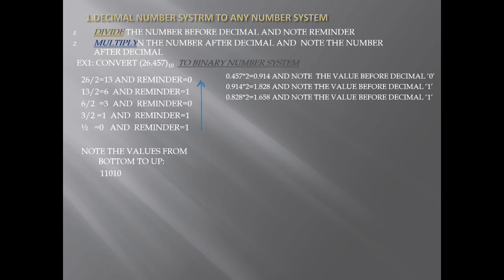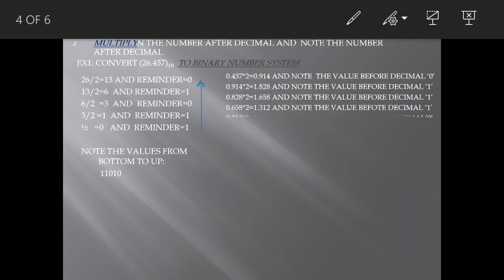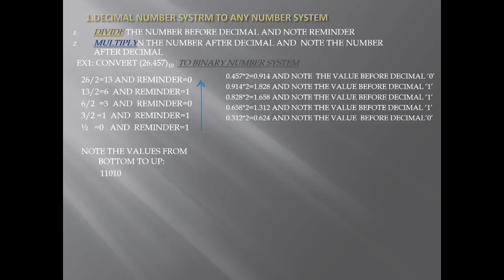We now multiply only the fractional part 0.828 by 2, getting 1.656. Note the digit before the decimal: 1. From 1.656, the fractional part 0.656 is multiplied by 2 and we get 1.312. Note the value.